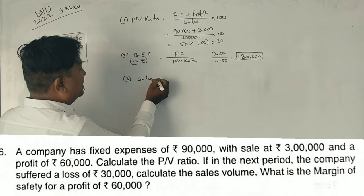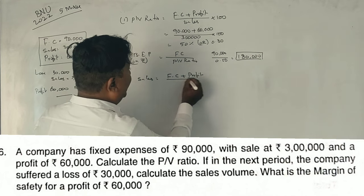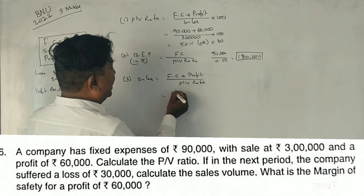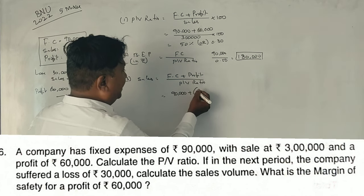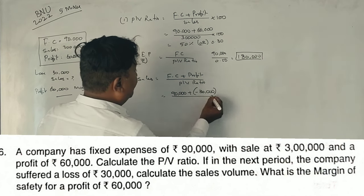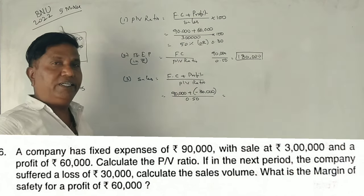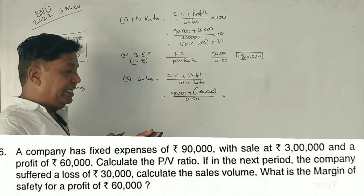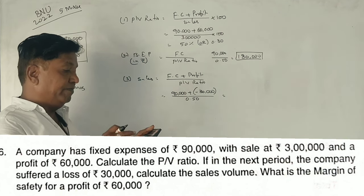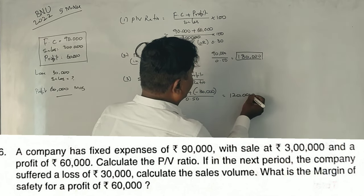Sales equals fixed cost plus profit divided by PV ratio. Fixed cost is 90,000, and since there is a loss of 30,000, profit is minus 30,000. So, 90,000 minus 30,000 is 60,000, divided by 0.50, gives sales of 1,20,000 rupees.